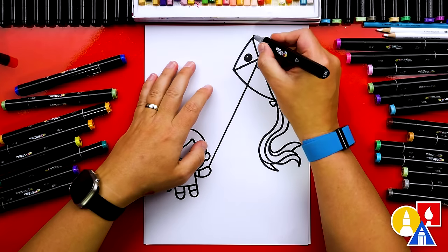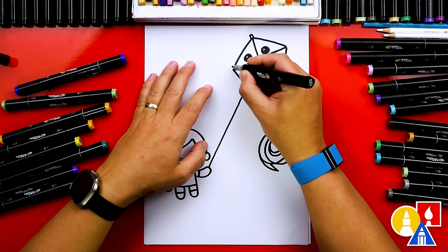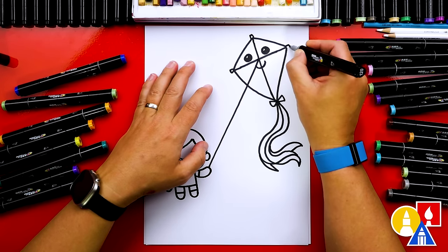Let's add another detail to our kite. We can add the little sticks poking out on each side.